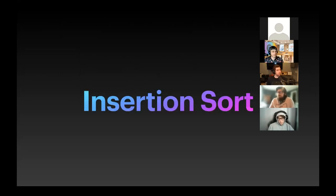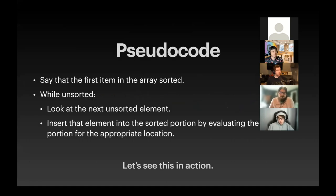Which one's next — insertion sort. Here's our pseudocode: whatever the first array item is, we're going to say that it's sorted — it's in its new home, it's in place. While the array is unsorted, we look at the next unsorted element and make a determination: is this higher or lower than the ones already sorted? We find the appropriate location for it and pop it into that location.